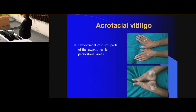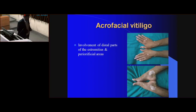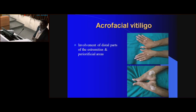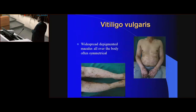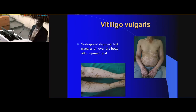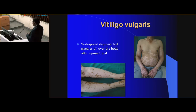In the generalized type, the first subtype is acrofacial vitiligo, meaning involvement of the distal parts of the extremities and peri-ocular lesions. The second type is vitiligo vulgaris, where you can see widespread depigmented macules that are symmetrically distributed and involve almost all parts of the body.